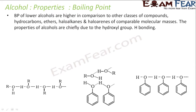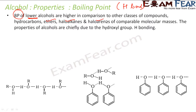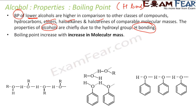Now let's talk about the boiling point of alcohol. There is one factor playing a critical role, and that is hydrogen bonding. That's why the boiling point of lower alcohols, when you compare with other hydrocarbons of similar molecular mass — for example ethers or haloalkanes — the alcohols have a higher boiling point, mainly because of hydrogen bonding.